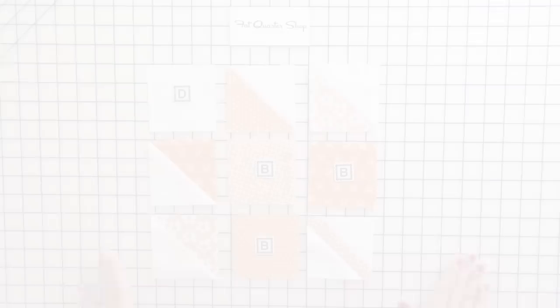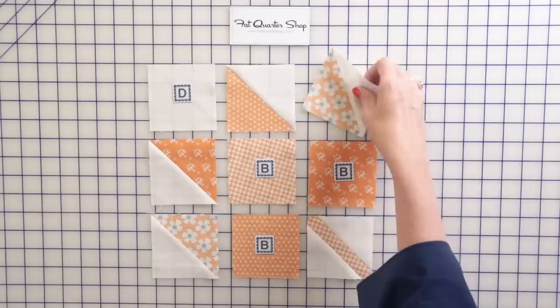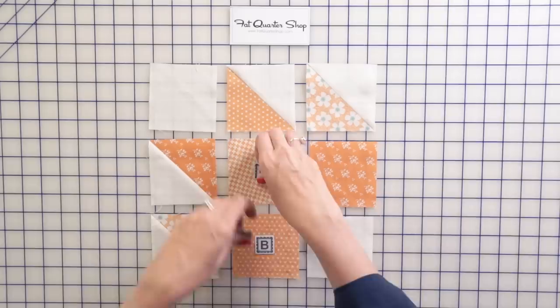So now it's time to just lay out your block. You're going to have a fabric D square, three fabric B squares, four half square triangles, and a stem unit. And you just want to pay attention to your half square triangle directions because you wouldn't want it to come out like this. So that is how that looks.